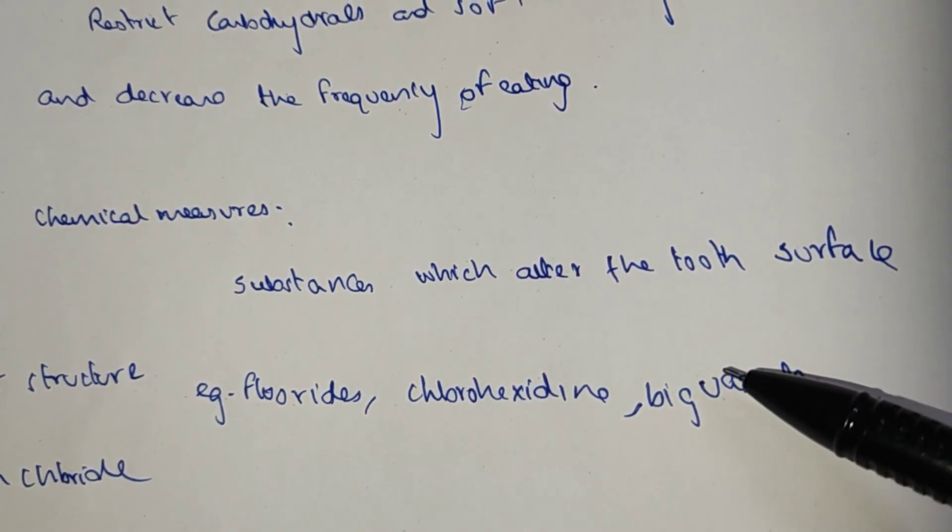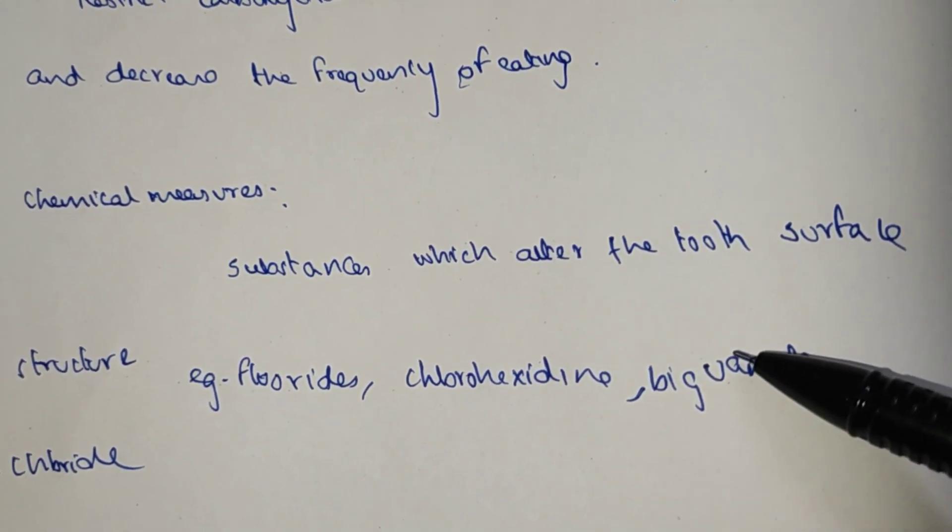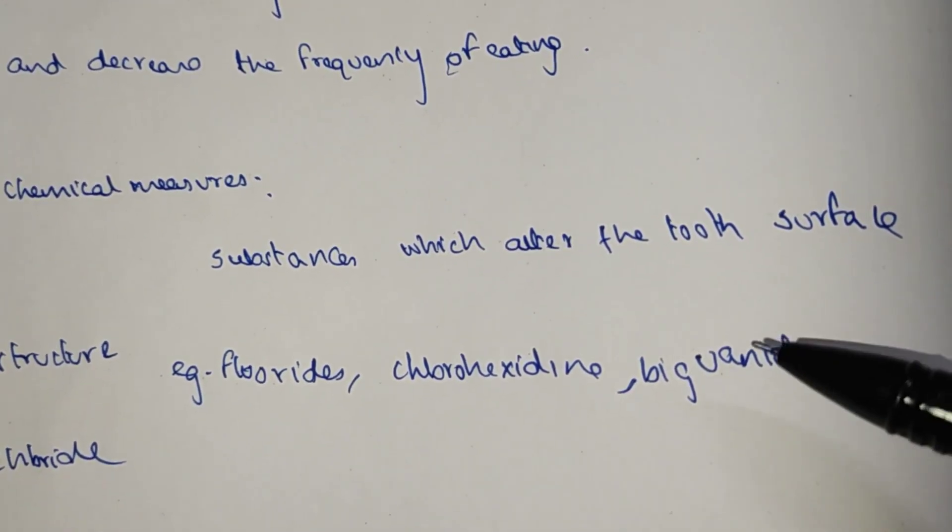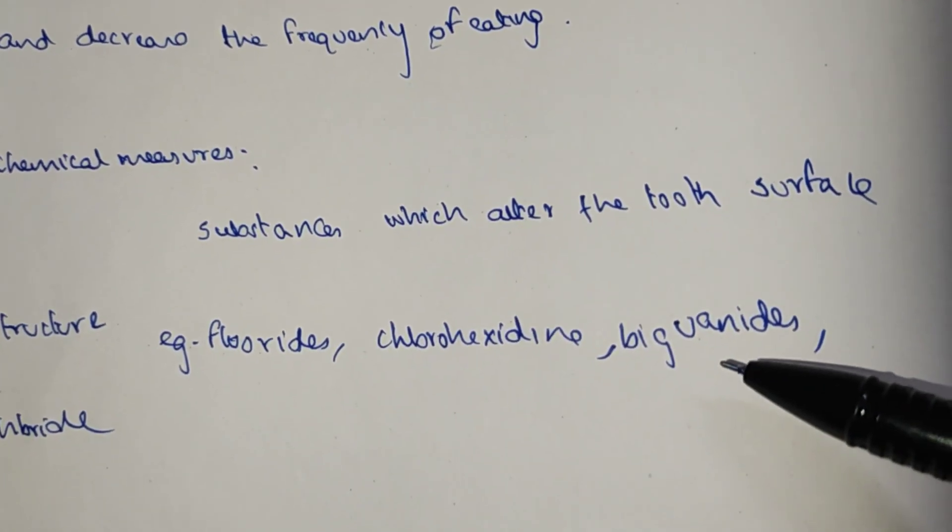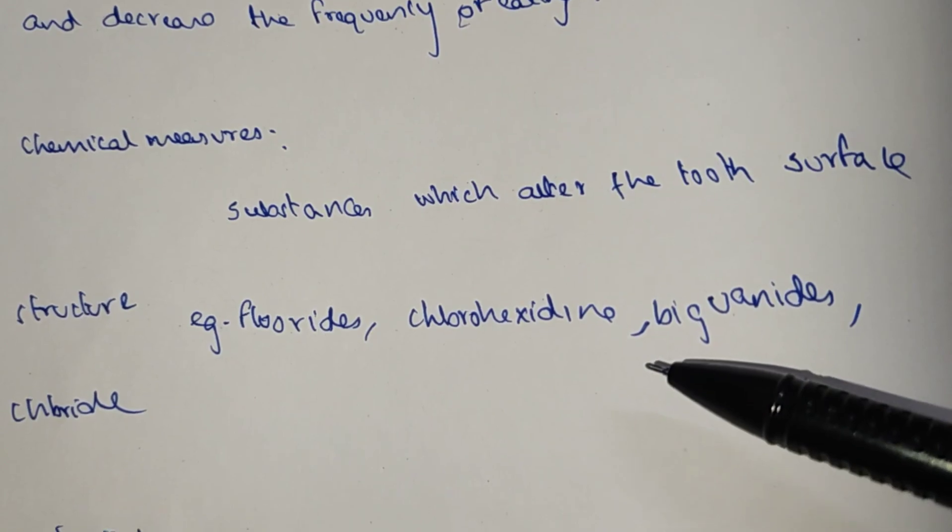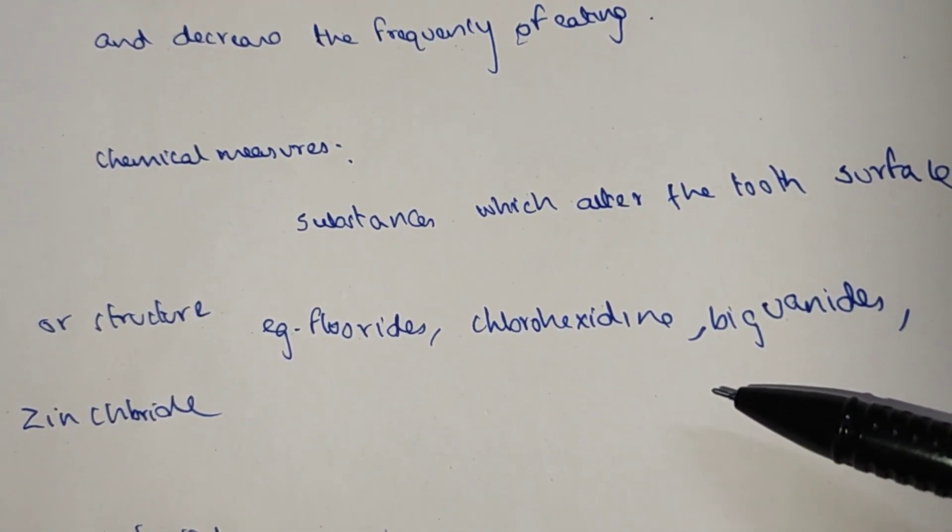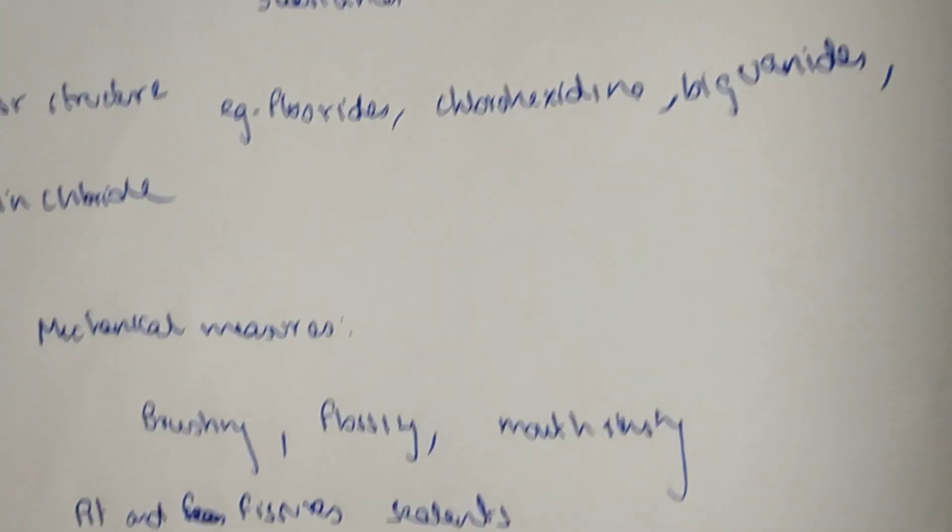Substances which alter the tooth surface structure include fluorine, chlorhexidine, and zinc chloride. These help protect against dental plaque and strengthen tooth structure.